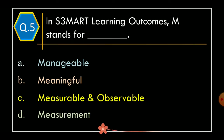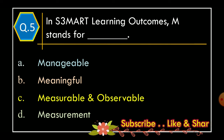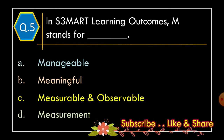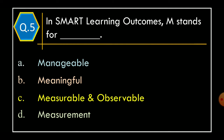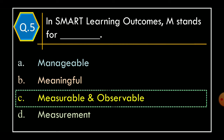Question 5: In S3MART Learning Outcomes, M stands for — Option A: Manageable; Option B: Meaningful; Option C: Measurable and Observable; Option D: Measurement. The correct option is Option C: Measurable and Observable.